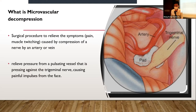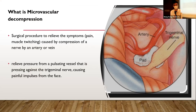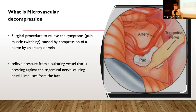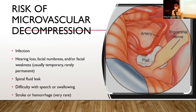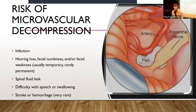If a patient with trigeminal neuralgia fails two to three kinds of neuropathic agents or if pain is disrupting quality of life, we usually refer for neurosurgical treatment. Surgery is done by neurosurgical colleagues to relieve pressure between the pulsatile artery pressing against the trigeminal nerve, which causes the irritable pain. Bear in mind there is a risk of microvascular decompression including infection, risk of hearing loss, and facial numbness.